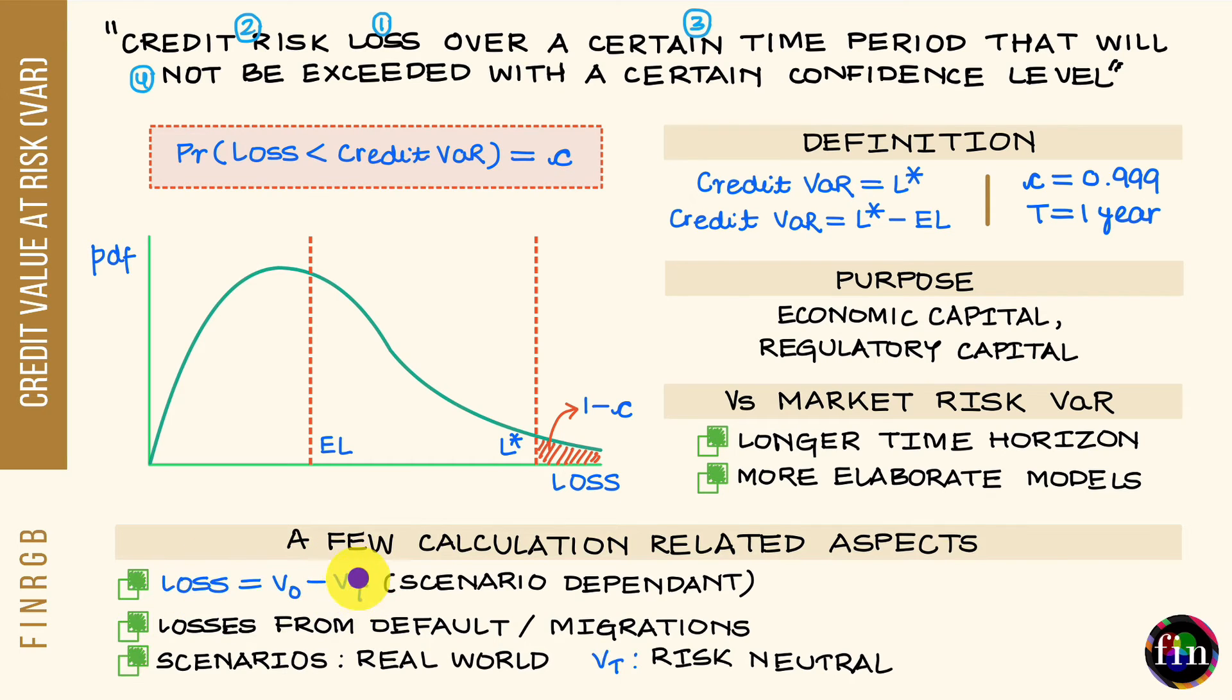I can say this, that V at this time capital T is scenario dependent. It depends on the scenario that I assume will prevail at the end of my chosen horizon. Now, to build my loss distribution, therefore, what I need to do is to generate many, many scenarios for what will happen at this time capital T. For each of these scenarios, calculate the value of V sub capital T, feed it into this formula to calculate the loss for any given scenario. And from all these losses across many different scenarios, build my loss distribution.